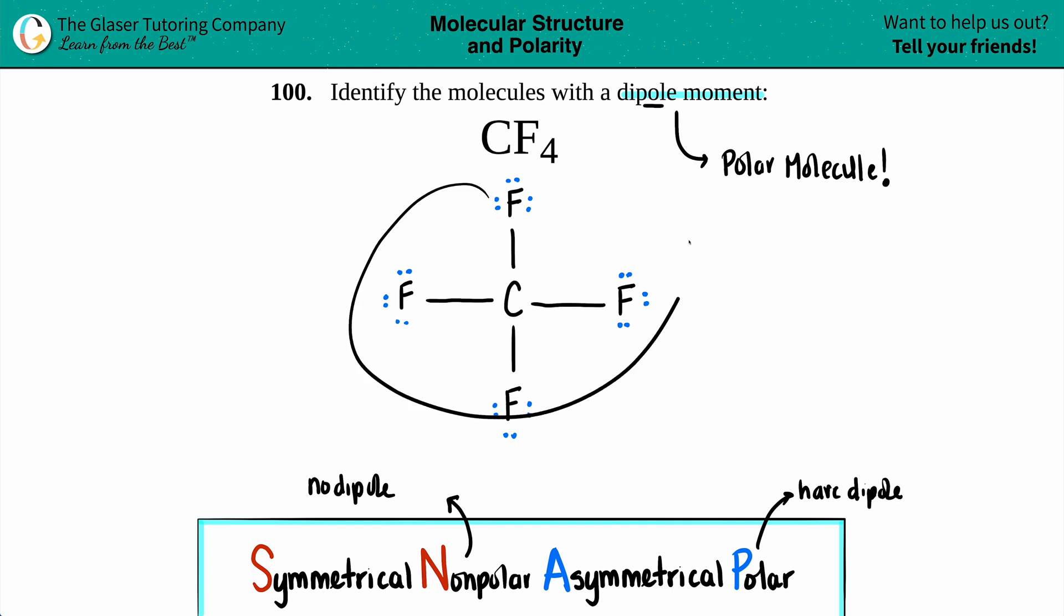Now if I look at this molecule, is it symmetrical or is it asymmetrical? Yeah, it's totally symmetrical. If I split this down the middle like a pizza, you got four slices that are completely identical. You have the fluorine, another fluorine, and another fluorine. There's no lone pairs for that carbon, so there's nothing that's adding to polarity. Everything is completely symmetrical here.